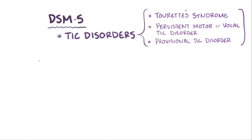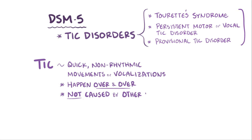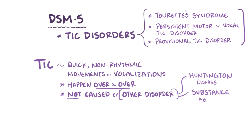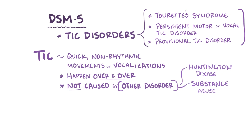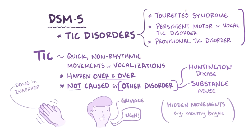Individuals with these disorders all suffer from tics, which are quick, non-rhythmic movements or vocalizations that happen over and over and are not caused by some other disorder like Huntington's disease or substance abuse. For example, individuals might feel the urge to spontaneously and repeatedly clap their hands, make a facial grimace, grunt, or even perform hidden movements like moving the tongue. Although these movements might seem appropriate in some situations, the fact that they're repeated even in inappropriate situations is why they're considered abnormal.